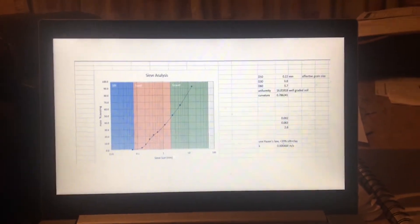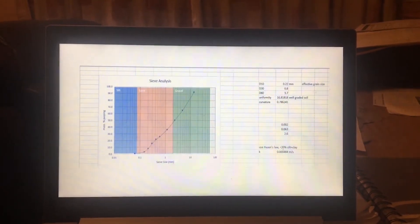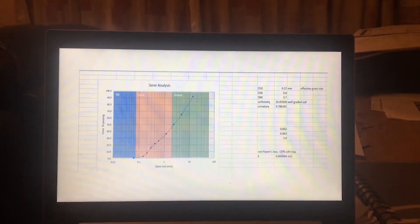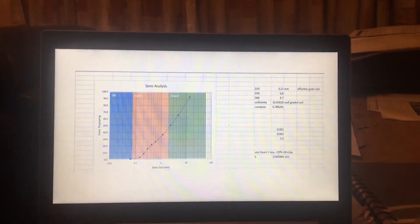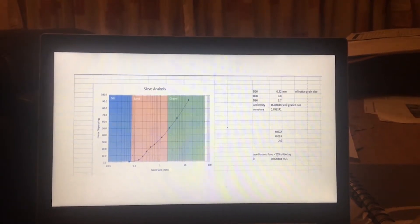The first test which we undertook was the sieve analysis. This allowed us to classify the types of soil which we found when we dug our trial pit. It tells us what percentage of the soil types gravel, sand and silt are present, while also calculating the uniformity of the soil.